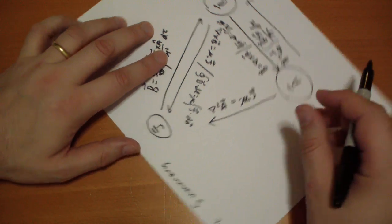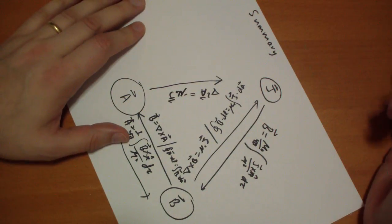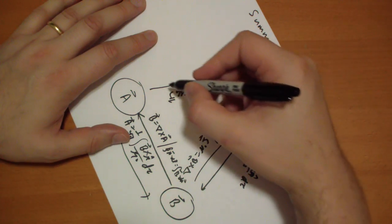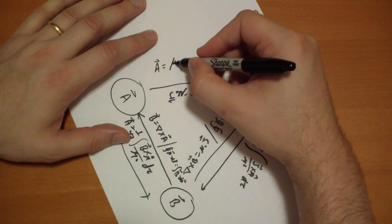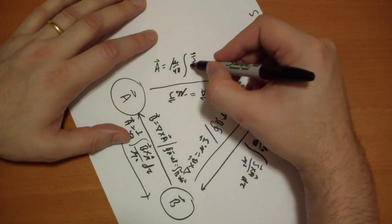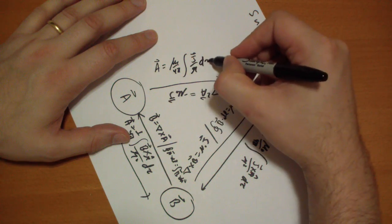And if you wanted to go the other way, I shouldn't do this to you. This is torture, isn't it? Okay. Then we have the A vector is equal to mu naught over 4 pi of the integral of J vector over R d tau.